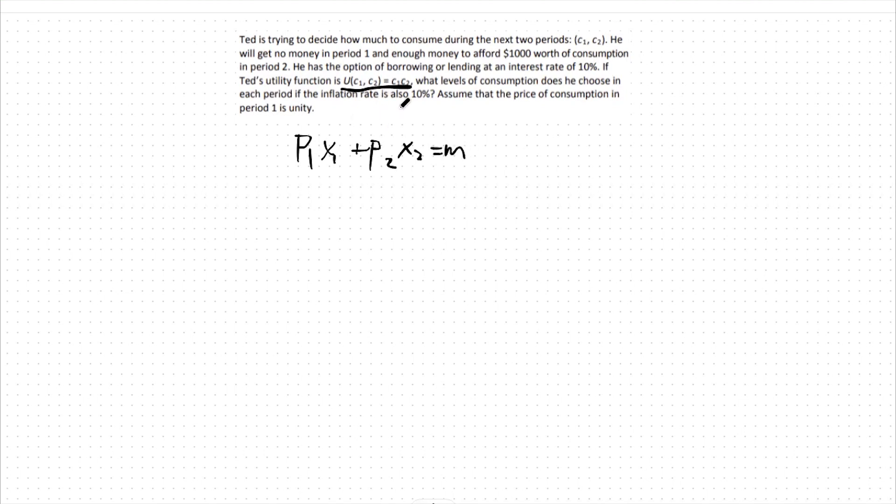Our new intertemporal budget constraint will be c1 plus c2 over 1 plus rho equals m1 plus m2 over 1 plus rho.